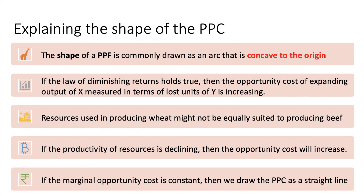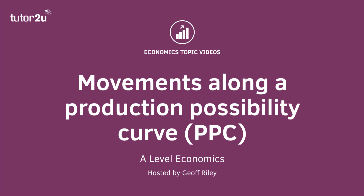If the marginal opportunity cost was constant between wheat and beef, then we draw the production possibility frontier as a straight line. The marginal opportunity cost would be exactly the same. So there we go — a quick revision on movements along a production possibility curve.